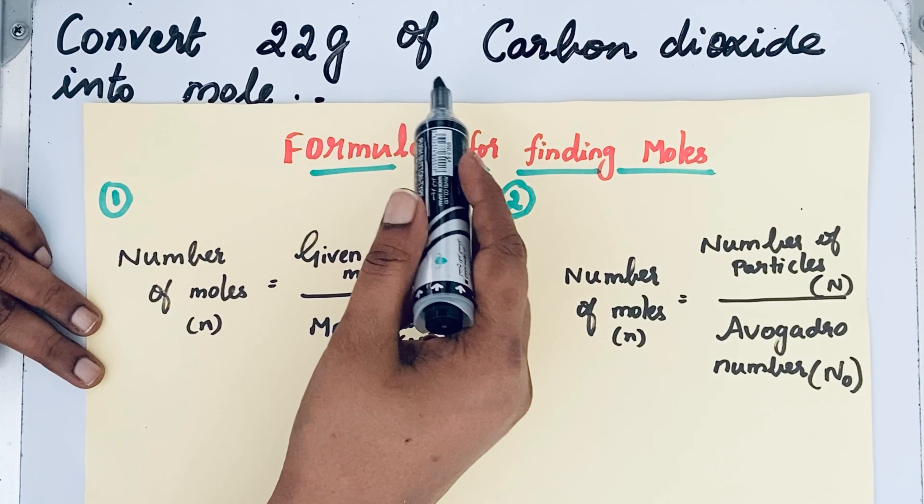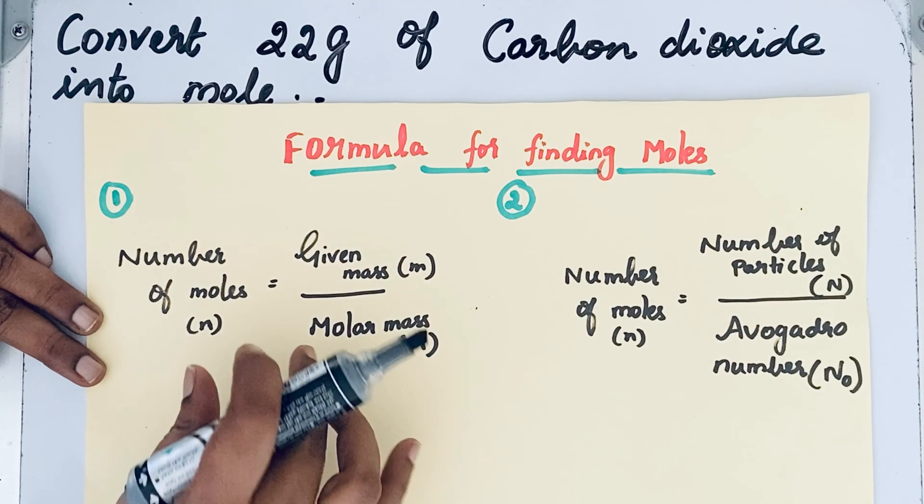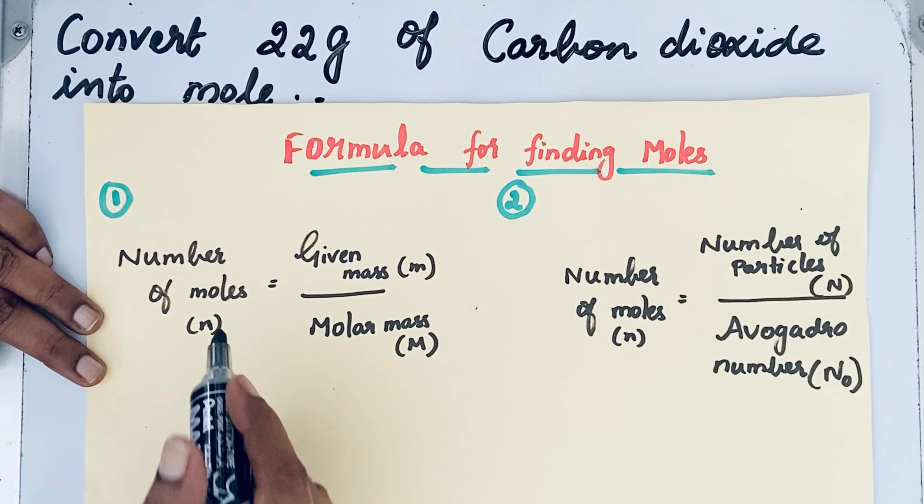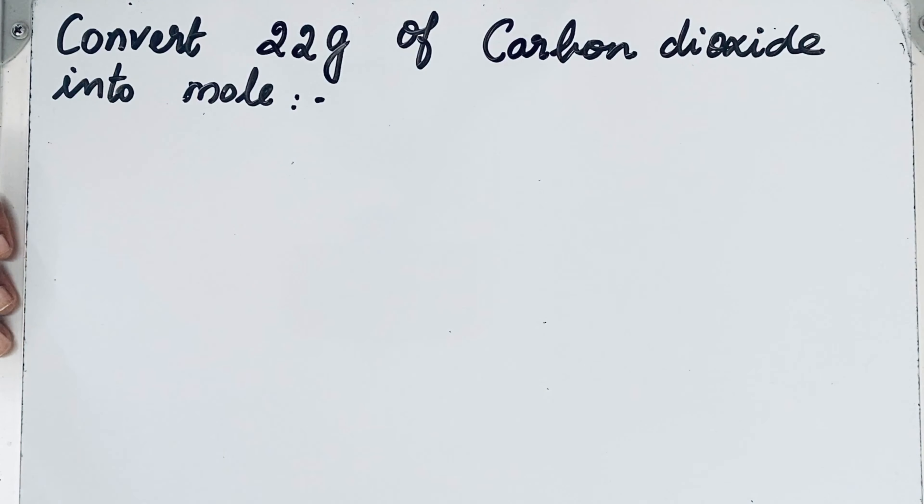Here you see the question: 22 gram of carbon dioxide. That means given mass is given, so we are going to use this formula. Number of moles is equal to given mass by molar mass. So let us write the formula first.